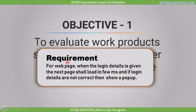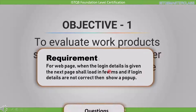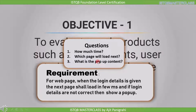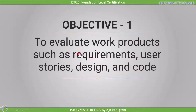Let's see an example. Suppose you are in the requirement phase and the customer requirement for a web page states: when login details are given, the next page shall load in a few milliseconds, and if login details are not correct, show a pop-up. If we look carefully, this requirement is not complete — there are open questions like: how much time do we have to wait, which page will load next, and what is the pop-up content? These require clarification. This is why it is necessary to evaluate work products such as requirements, user stories, design, and code.